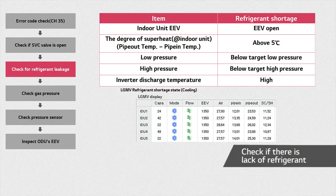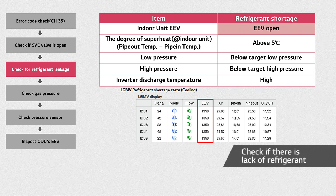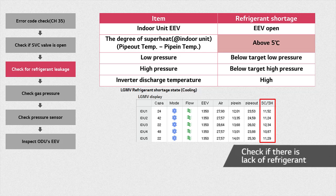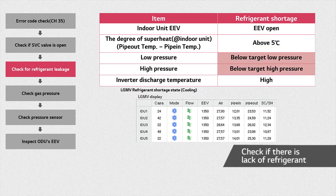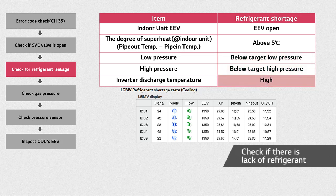Start by checking if the refrigerant is insufficient using LGMB. Through LGMB, you can also check the cycle. You can tell that the refrigerant amount is lacking when the indoor unit EEV is fully open and the degree of superheat at the indoor unit is above 5 degrees. Superheat is the difference between the pipe-out temperature and the pipe-in temperature of the indoor unit. Also, when both low and high pressure are below the target pressure for each, or the discharge temperature of the inverter is higher than usual, you can tell there is a lack of refrigerant.